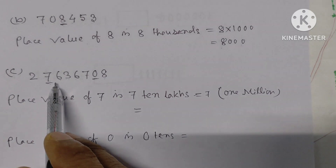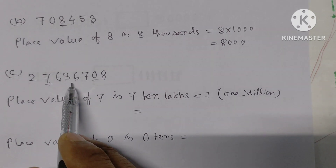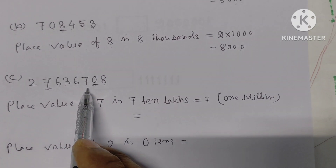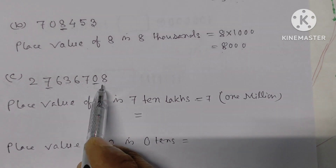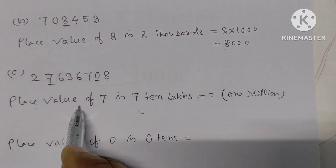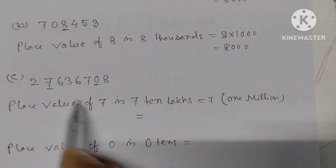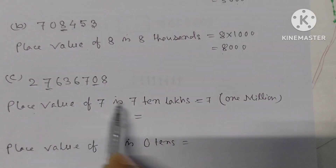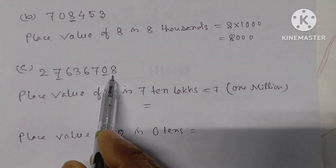Counting the places — ones, tens, hundreds, thousands, ten-thousands, lakhs, ten-lakhs, crores — the number is 2,76,36,708. The place value of this 7 is 7 into 10 lakhs.